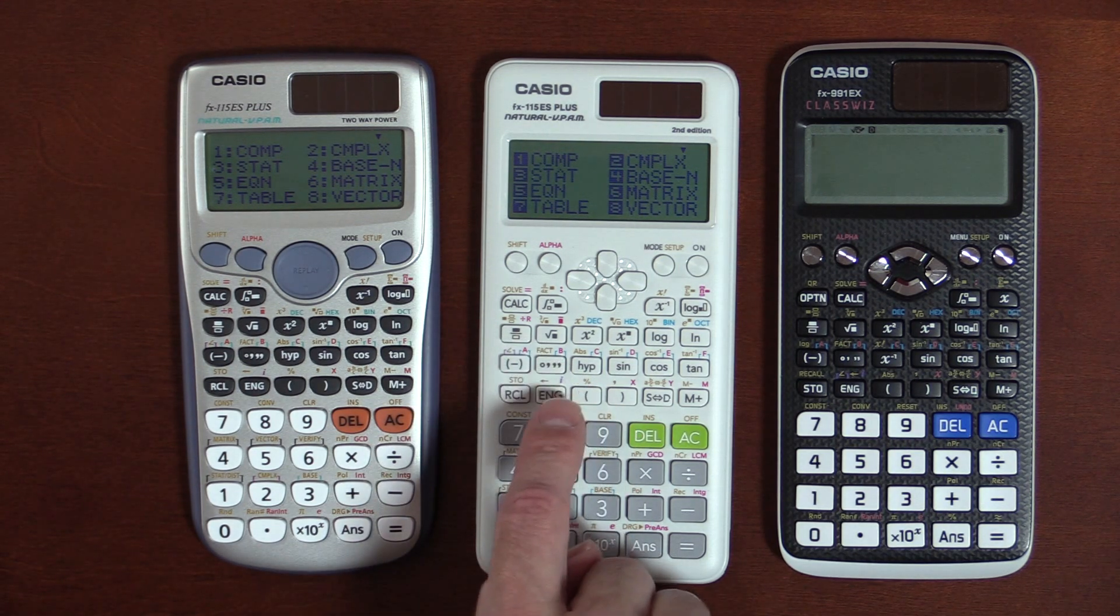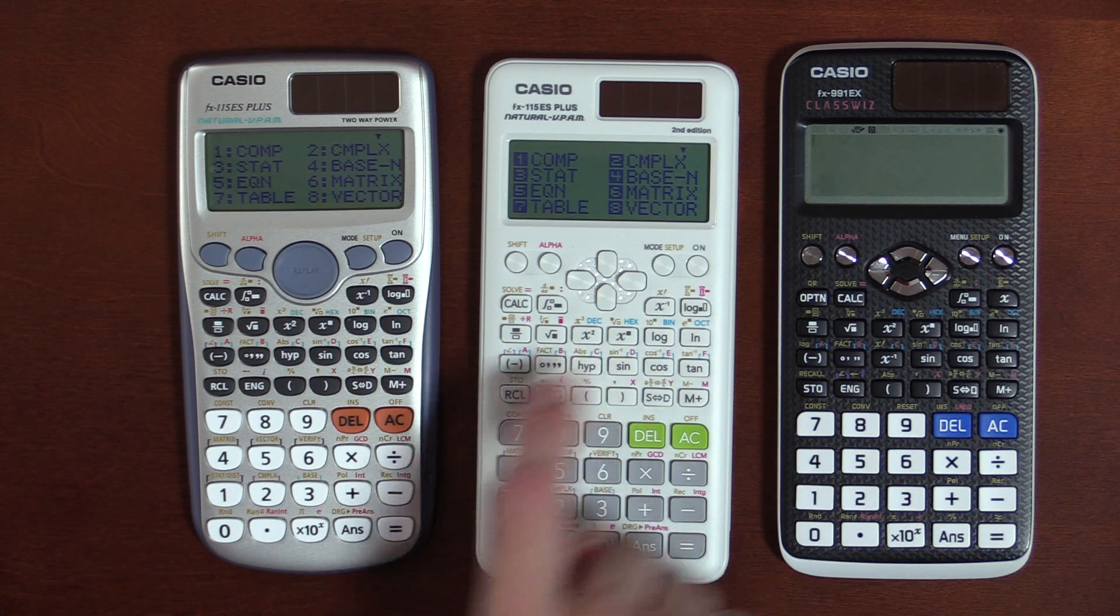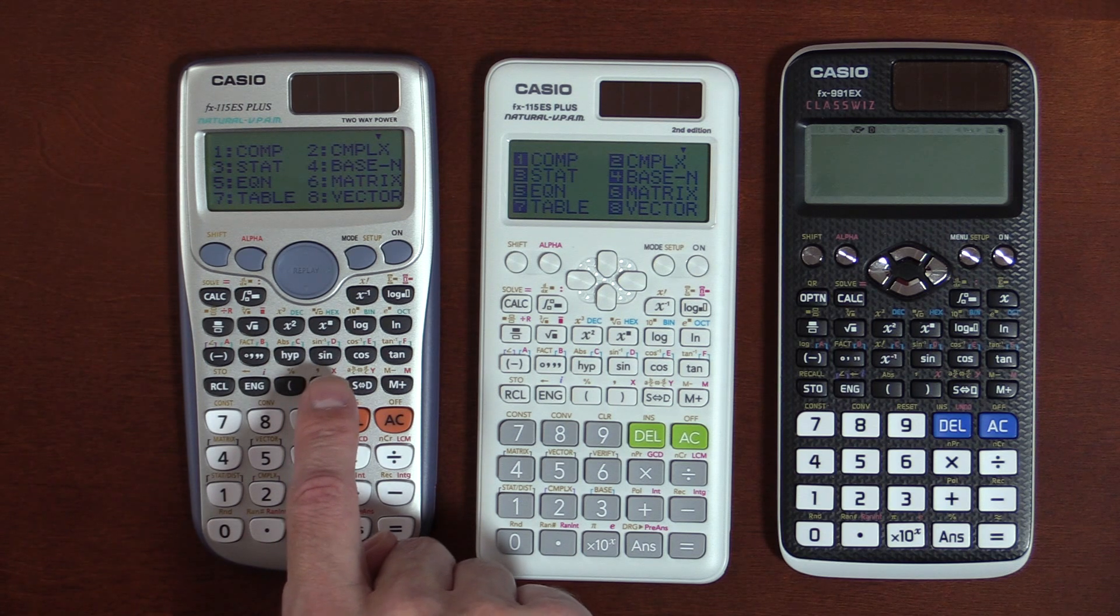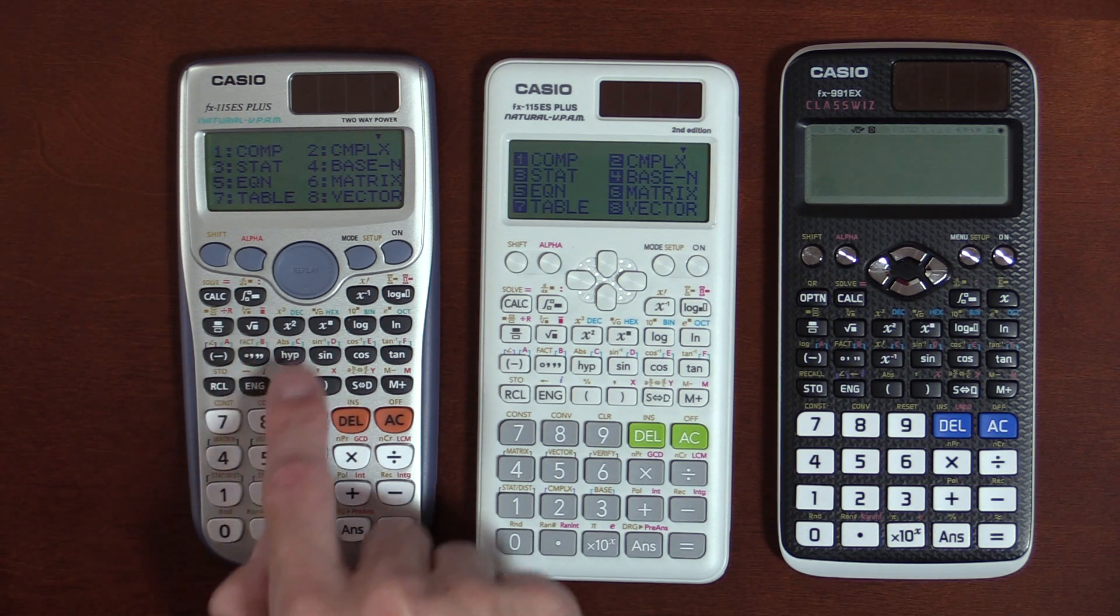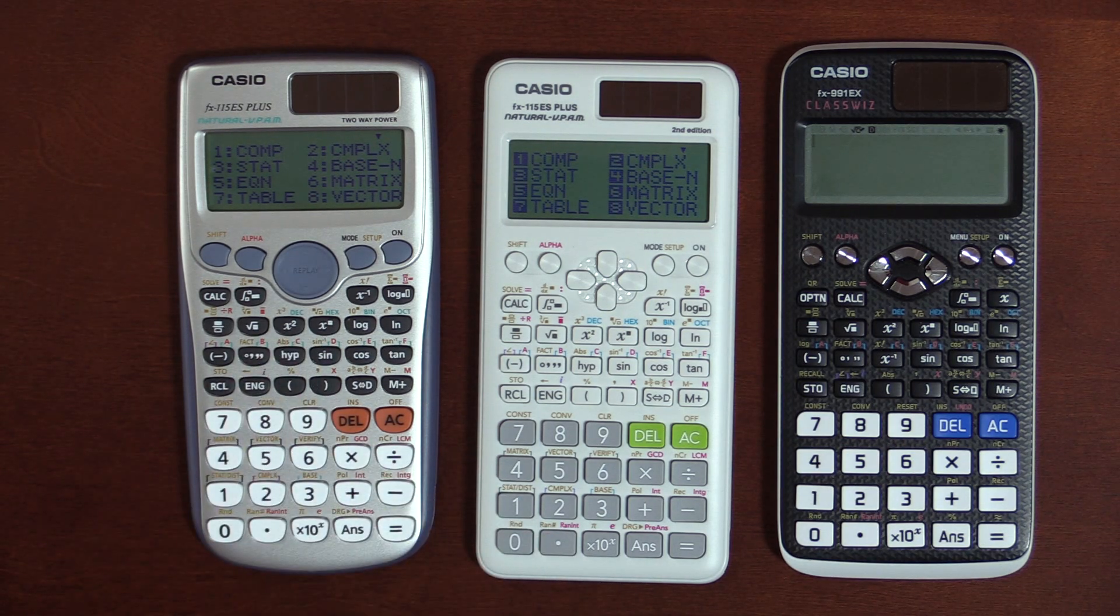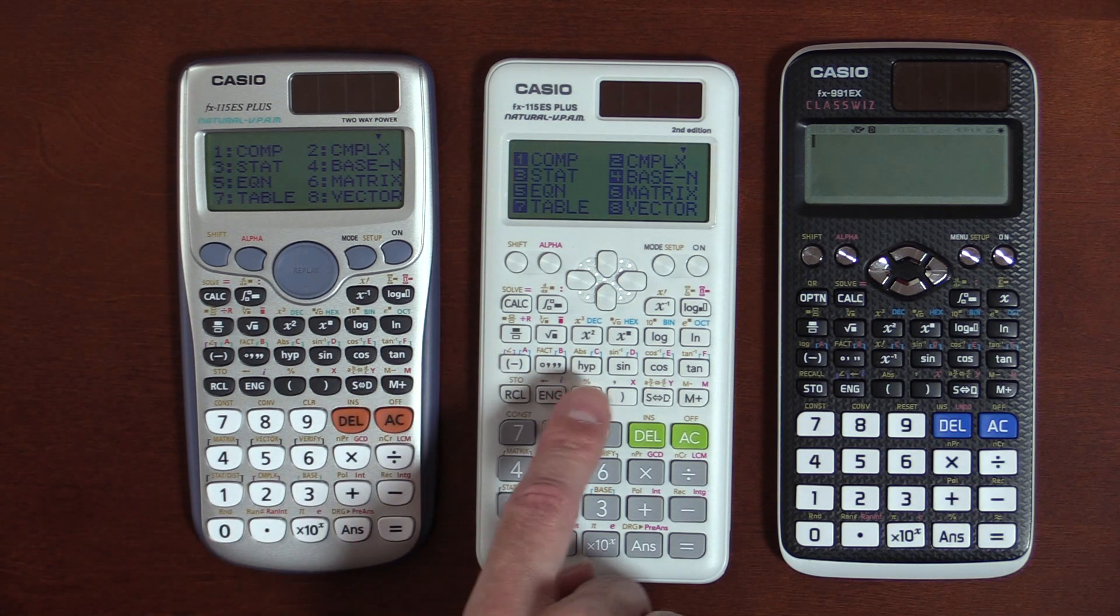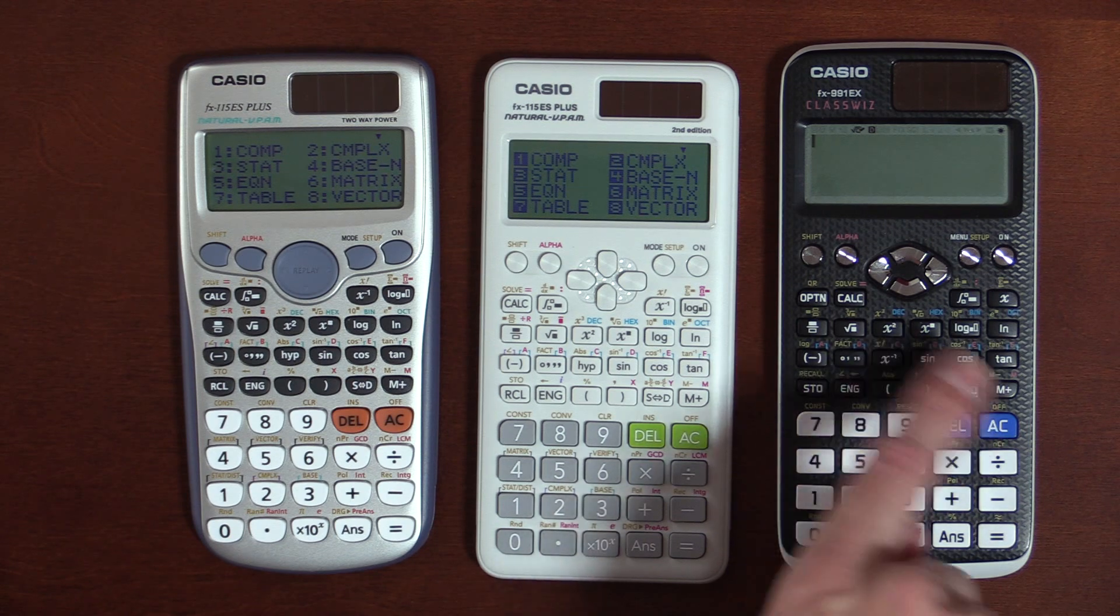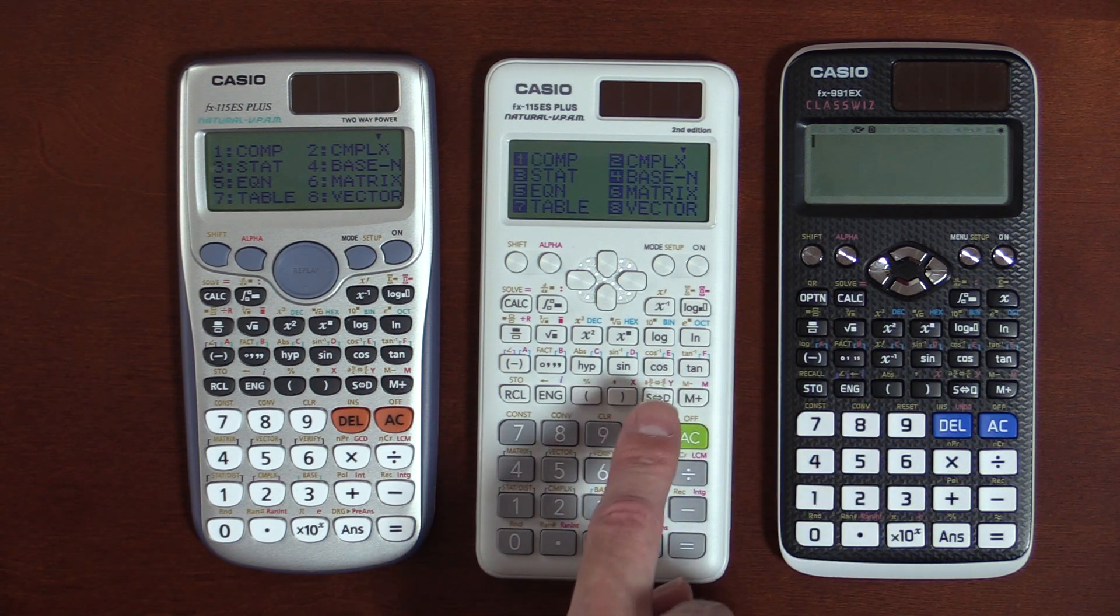And one thing I will say is I hope the markings on the keys hold up better than they did on my older version of this calculator, where certain keys, the silkscreen or whatever it is they use to print on the keys had worn pretty good. And hopefully this is better than that. It seems like the 991EX holds up great, so I'm hoping they use the same process here.